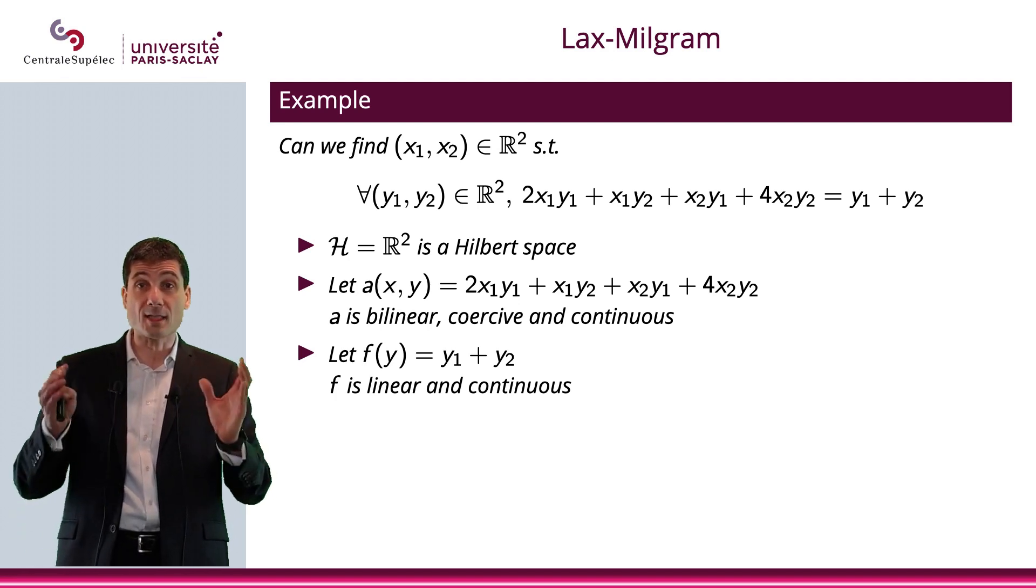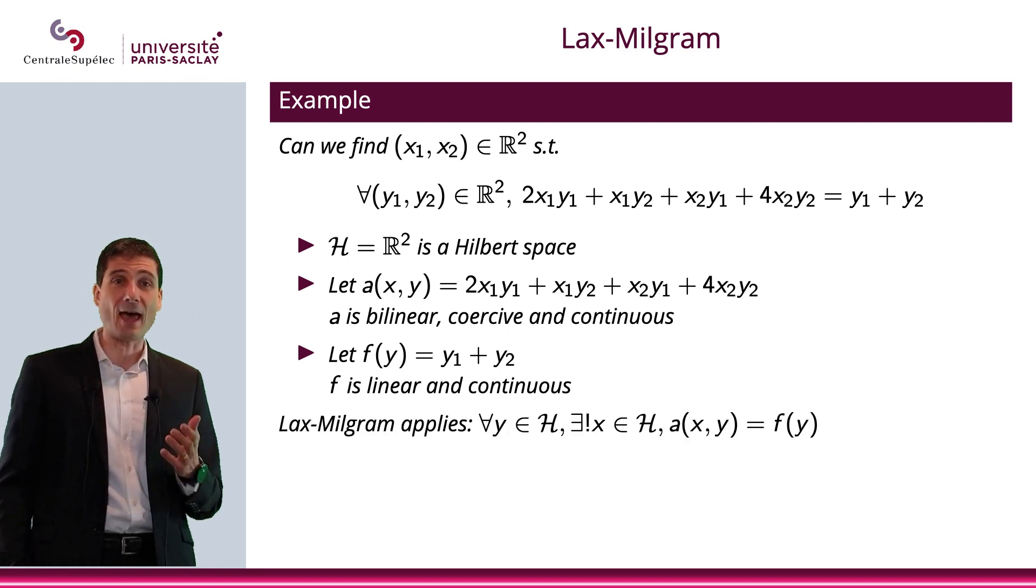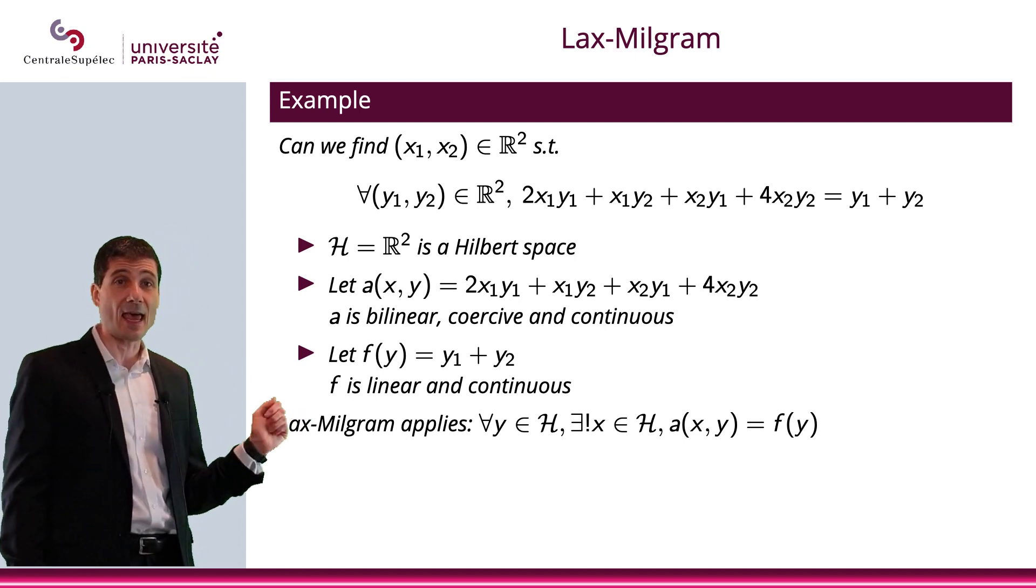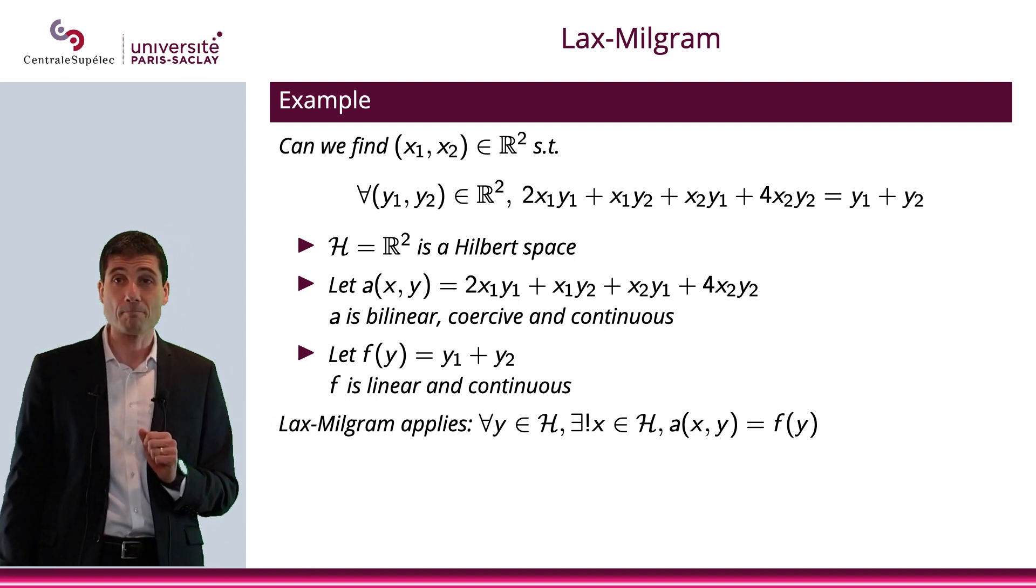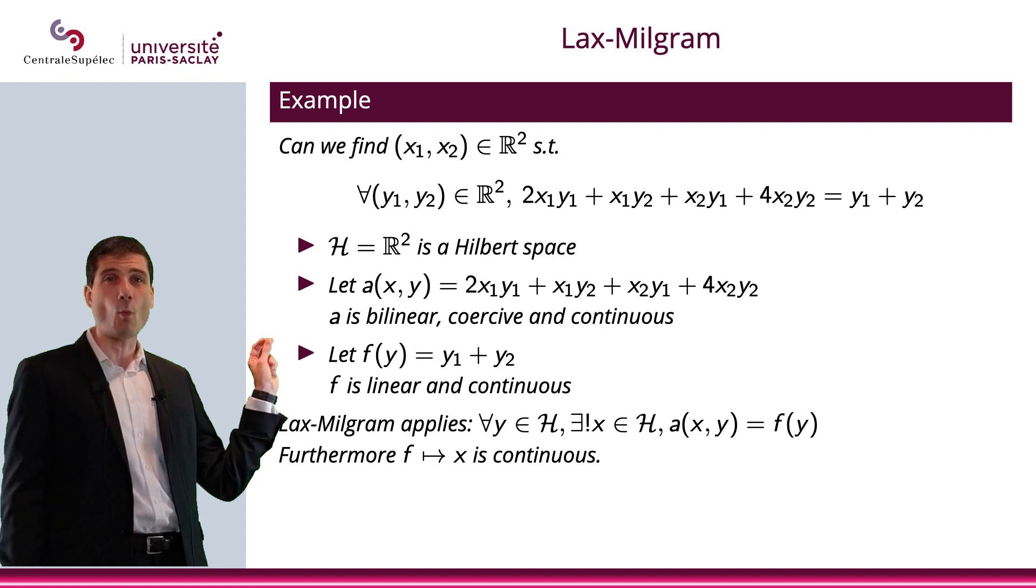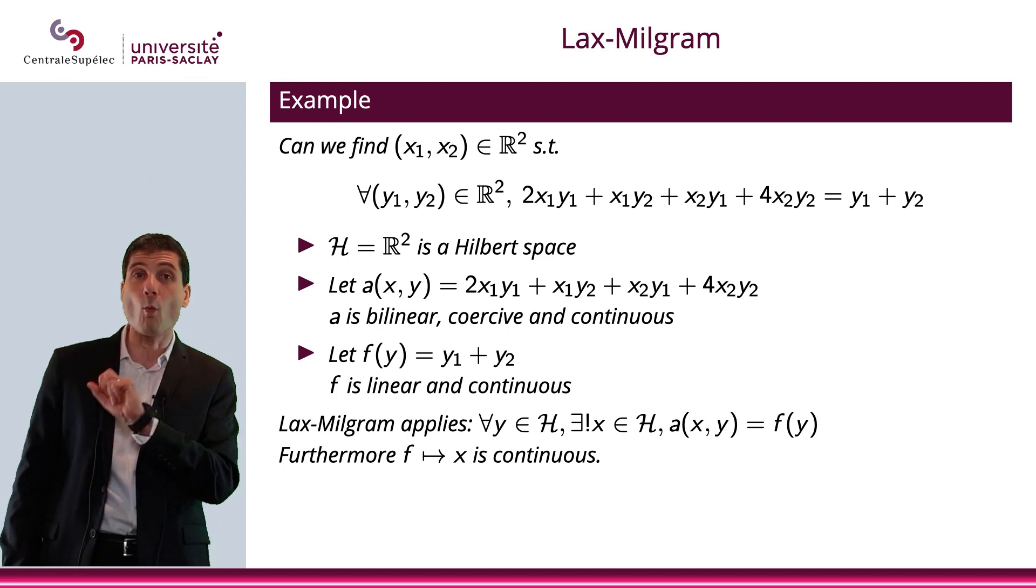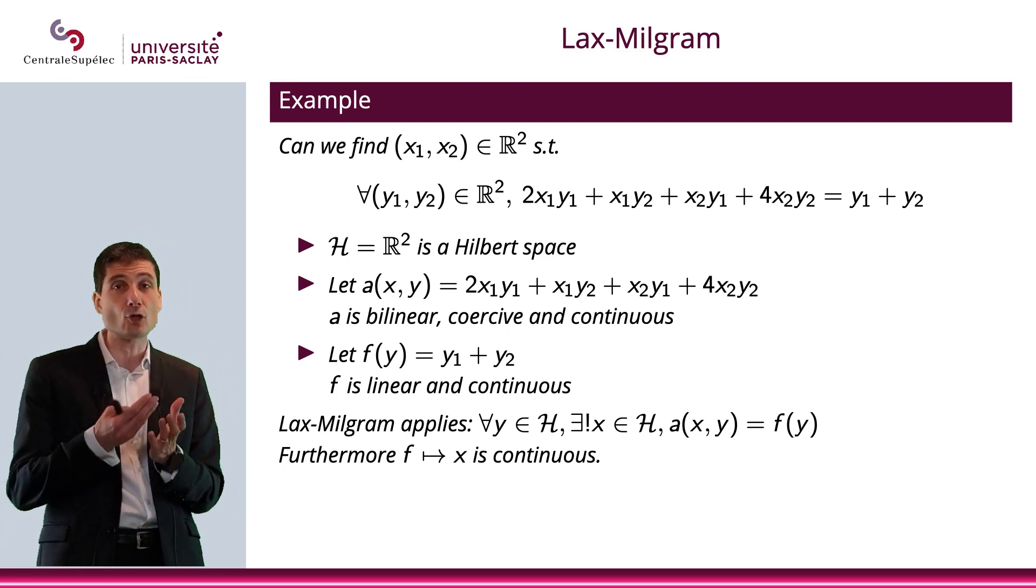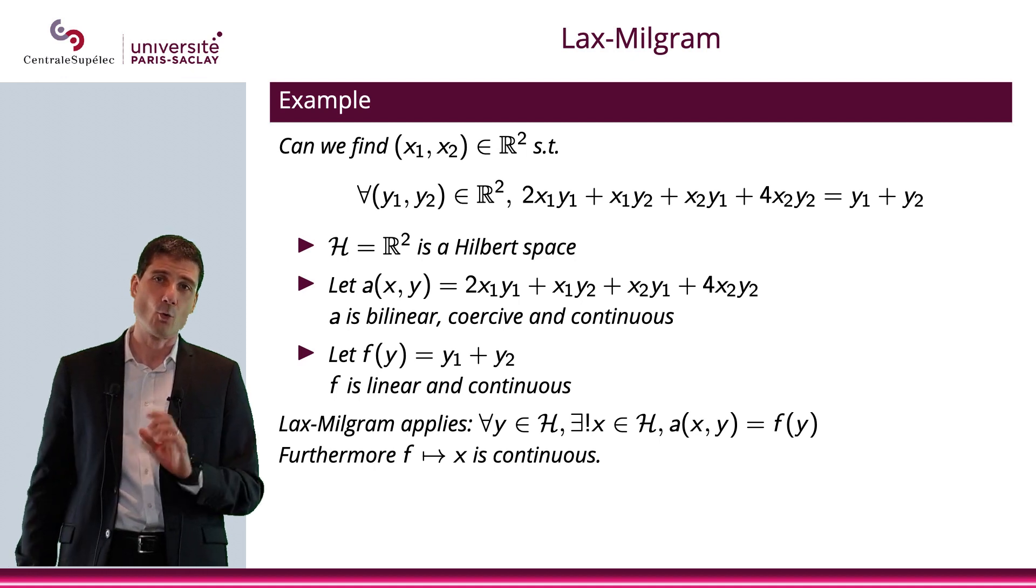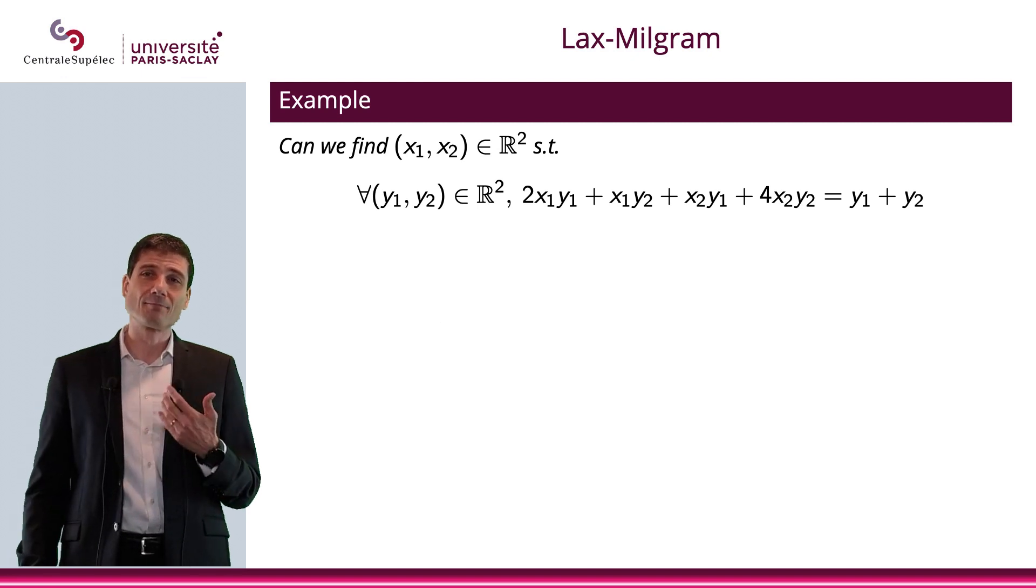So, let's apply the Lax-Milgram theorem. And what we have is that for all y in H, there exists a unique x such that A(x,y) = F(y). On top of this, if I change F a little bit, let's say, for instance, instead of having y₁ + y₂, I have 0.99y₁ + 1.001y₂, then what we're saying is that the solution will be not so far away from what it is for that y₁ + y₂. We have continuity. Well, obviously, using this Lax-Milgram theorem to solve that problem is a little bit like using big guns to kill a mosquito.